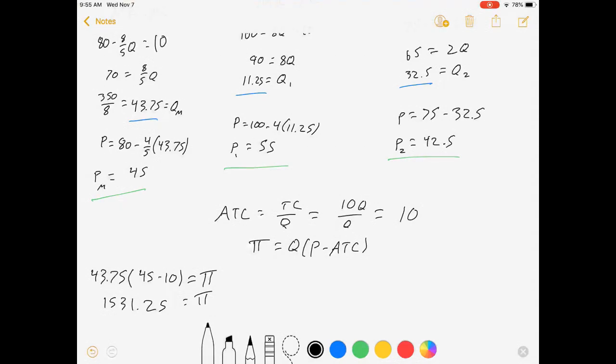If we do it just for segment one, that's for our single market. Profit for segment one is equal to 11.25 times 55 minus 10. Profit for segment one is equal to 506.25.